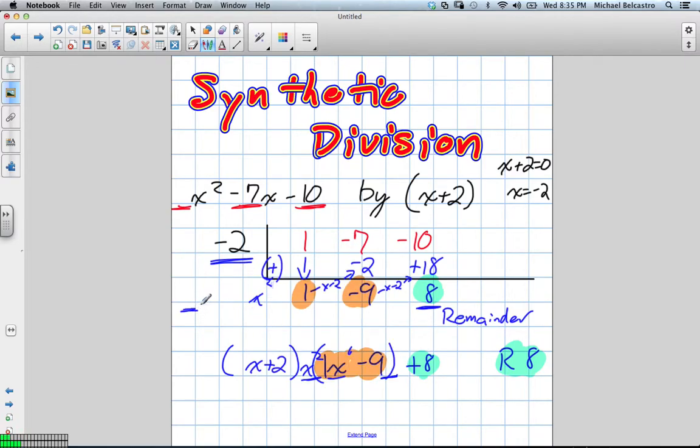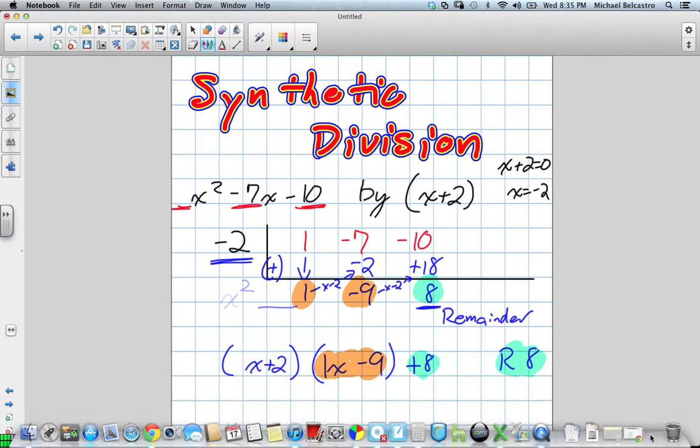And then another term would be x to the power of 3. It really depends on how large the original one is. Because this is a quadratic power of 2, we're going down by 1, so the highest power will be to the power of 1. Had this been cubed, our answer would for sure have been x squared, something x, and then a constant. That's just for future versions.